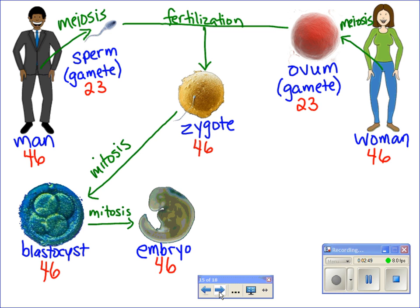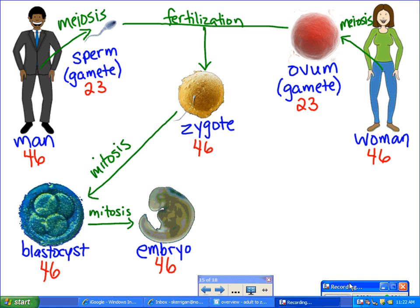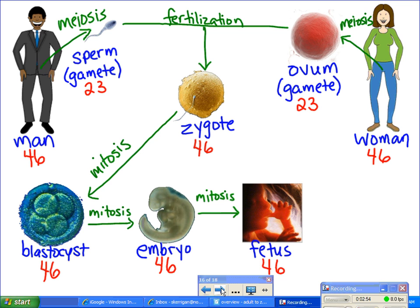Mitosis continues. You get an embryo with 46 chromosomes in each cell. And then a fetus. Look at the little fetus sucking its thumb with 46 chromosomes in each of the cells. Mitosis continues over a nine-month period, and eventually you end up with a baby. And all of the cells in the baby contain 46 chromosomes.